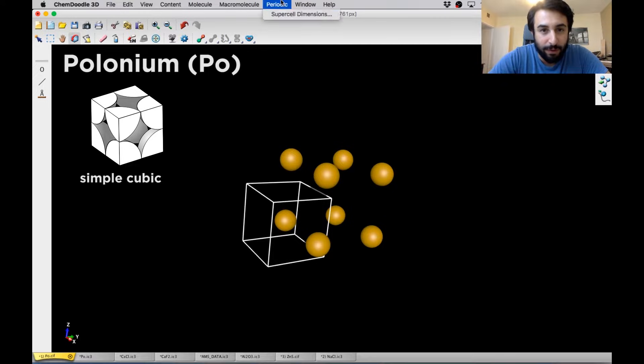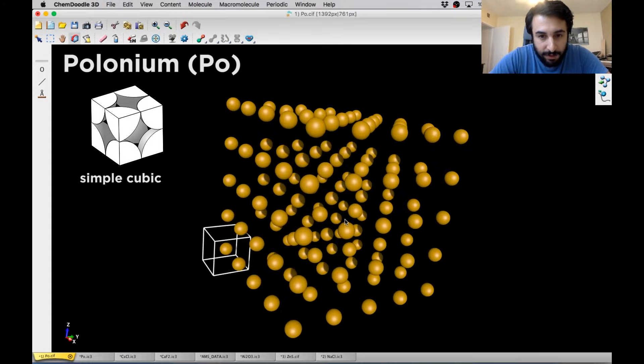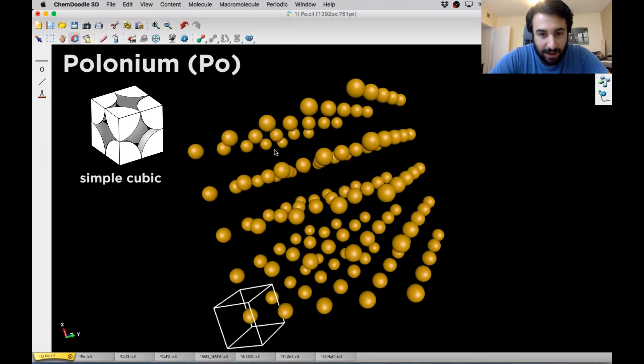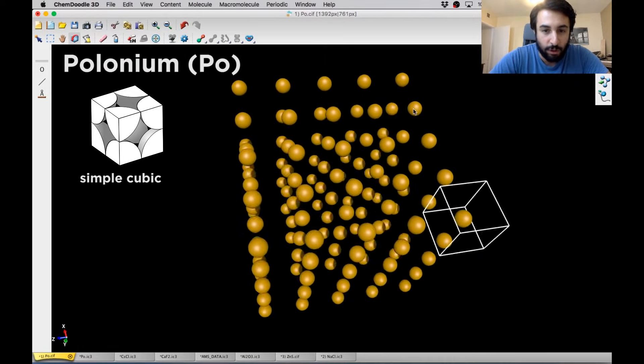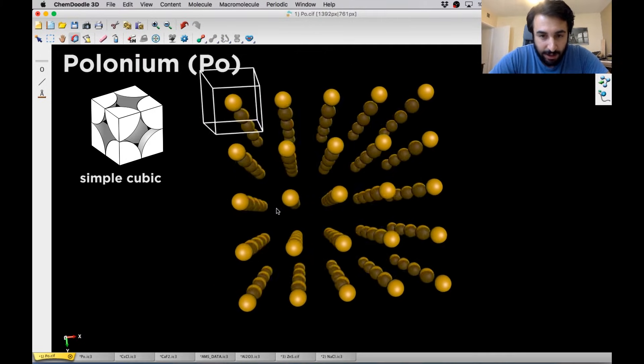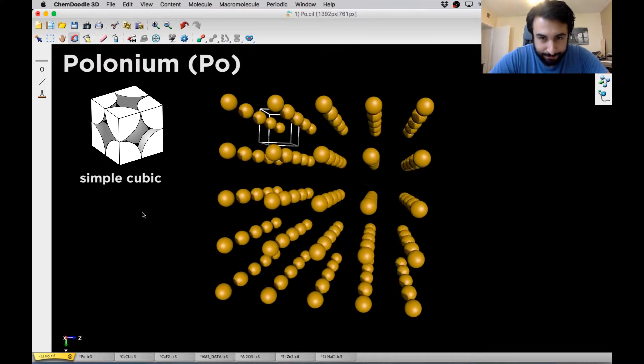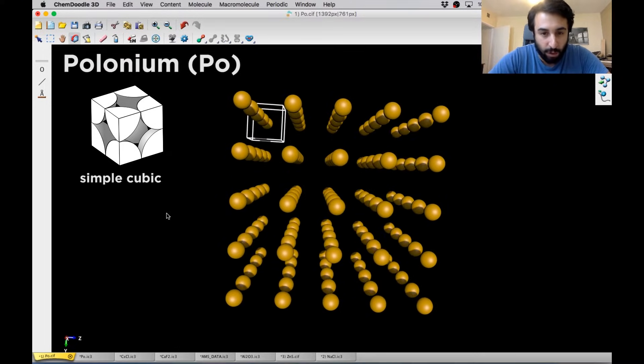We can build this out even further. Let's do five of them. And so you can really see how this is considered a simple cubic structure. There's really no simpler repeating unit in three dimensions. So that's what this is going to look like. And so now we can move on to some more complex situations.